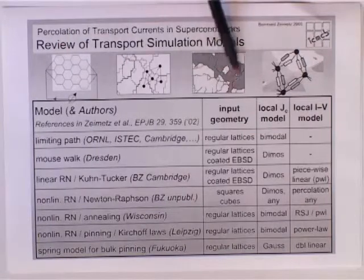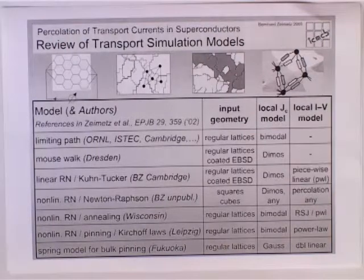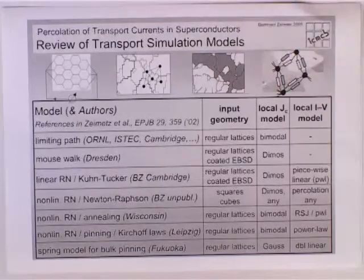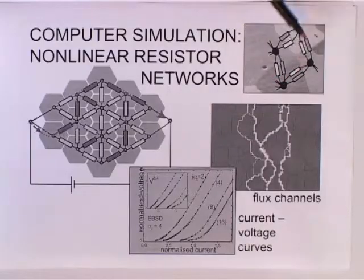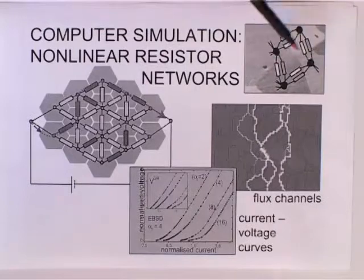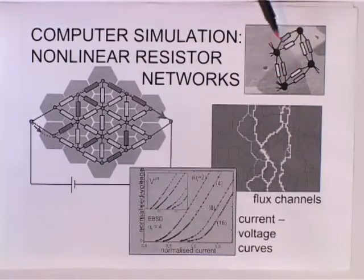Or you can use a real grain boundary network and simulate this as a resistor network. Each grain boundary has a pair of resistors, just because this makes a linear optimization problem.